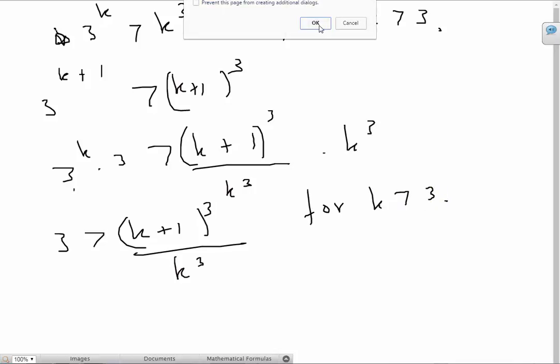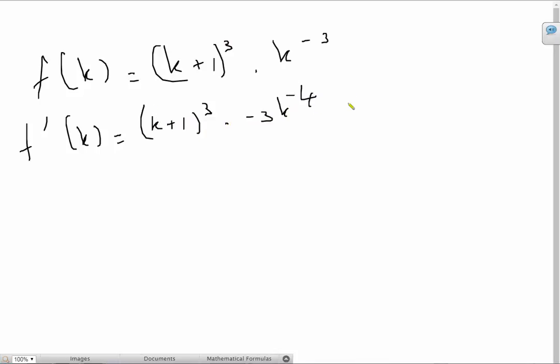And the way we're going to do this is by using some calculus. So we have f of k equals k plus 1 cube times k raised to minus 3. And the derivative of this is going to be the first function times the derivative of the second function plus the second function times the derivative of the first function. And after a bit of simplification, we finally end up with minus 3 times k plus 1 squared divided by k raised to 4.